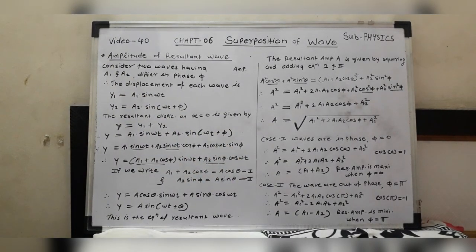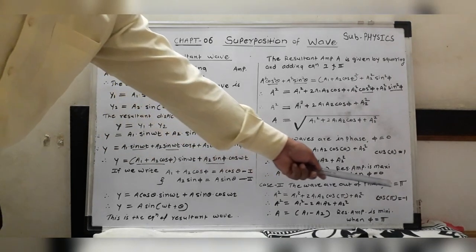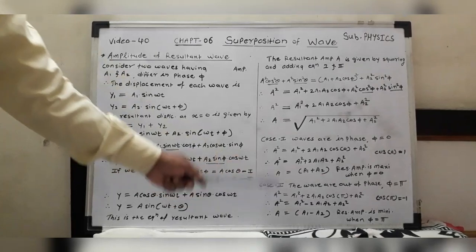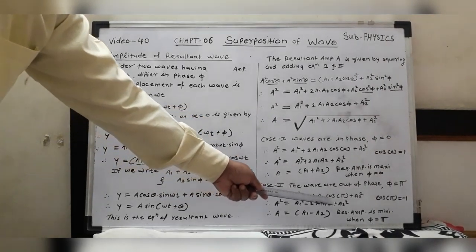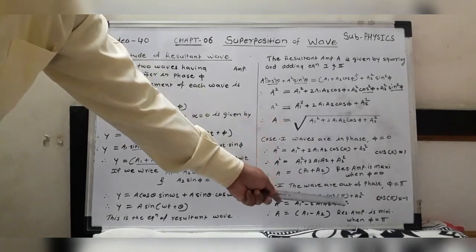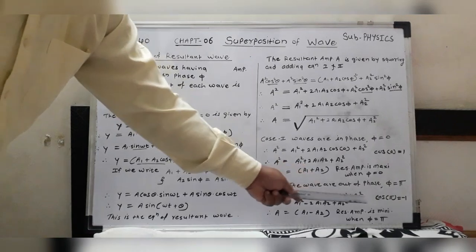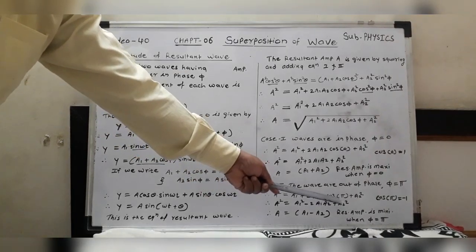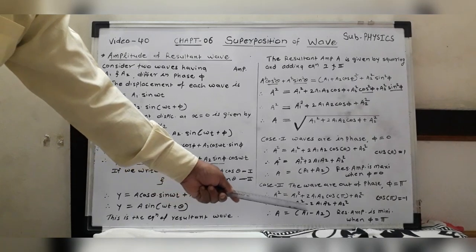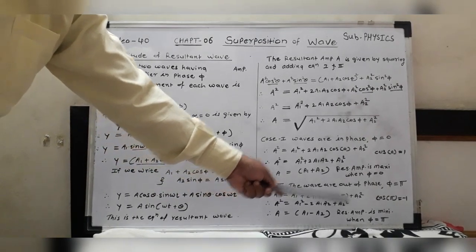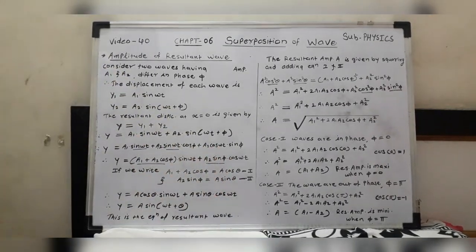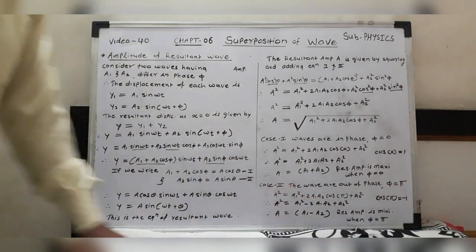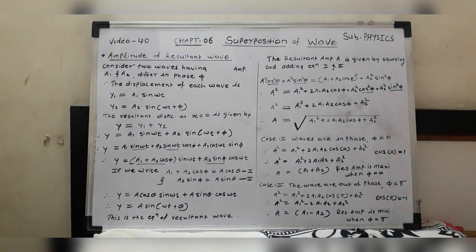Case 2: if the two waves are out of phase, i.e., in opposite directions, then φ = π. Since cos π = −1, we get A² = A1² − 2A1 A2 + A2² = (A1 − A2)². Therefore A = A1 − A2. The resultant amplitude is minimum when φ = π. These are the two special cases for the resultant amplitude.